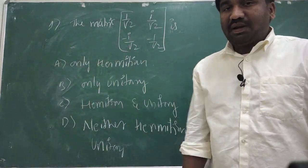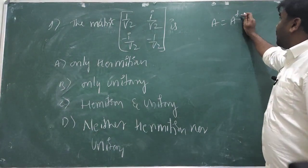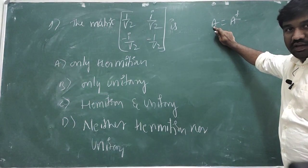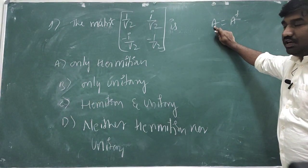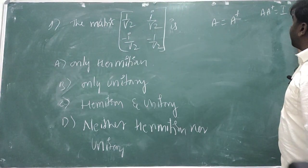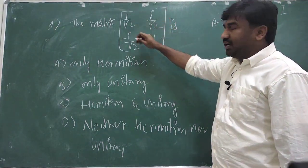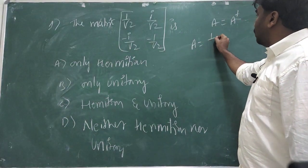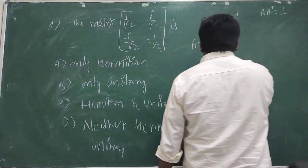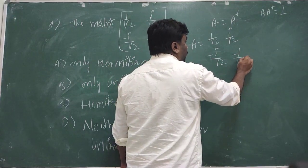We know that a Hermitian matrix means A equals A†. A† means we first take the complex conjugate of the elements of A and then transpose. Unitary means A·A† gives the identity matrix I. Consider the matrix A = [[1/√2, i/√2], [−i/√2, −1/√2]].